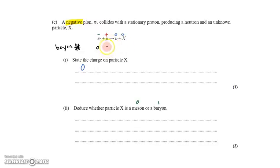The proton is a baryon, so it has baryon number one. The neutron is a baryon, so it has baryon number one. And for conservation of baryon numbers, that means particle X must have baryon number zero.